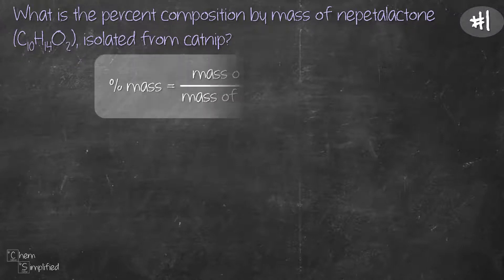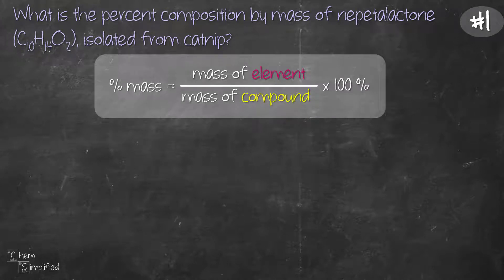The formula for percent mass is mass of the element divided by mass of the compound times 100. So first of all, let's find the mass of the compound which in this case is nepetalactone. Basically, we need to find the molar mass of C10H14O2.